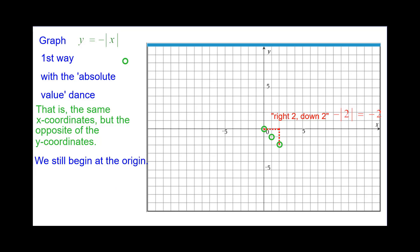Similarly, right 2 down 2 and right 3 down 3. And then to the left 1 and down 1 instead of up 1 like we normally would. Left 2 and down 2 and left 3 and down 3.